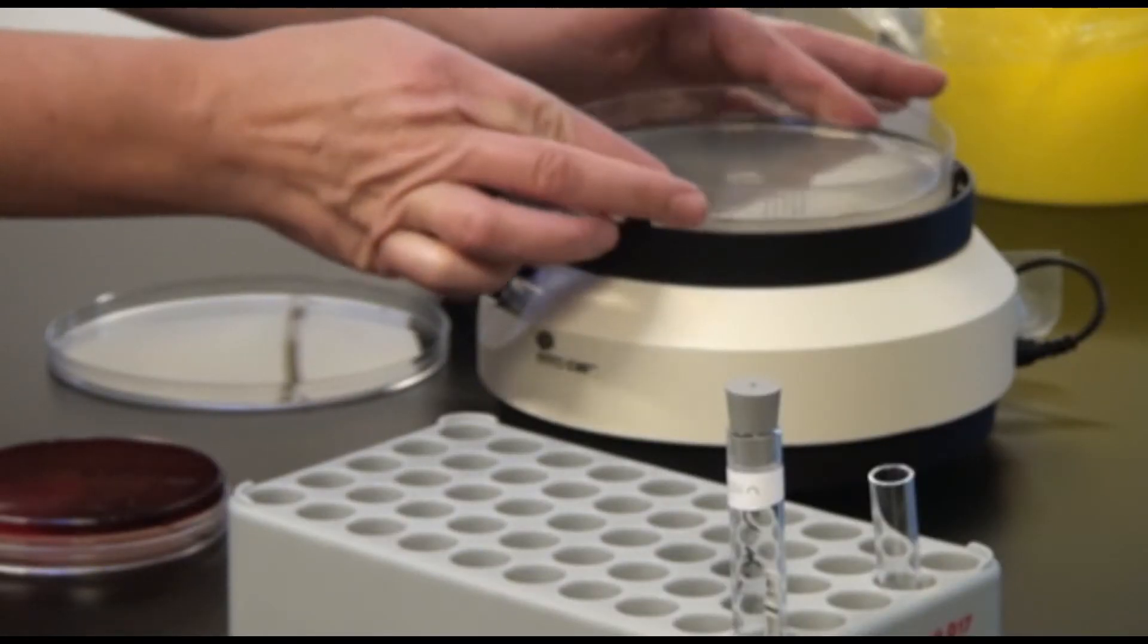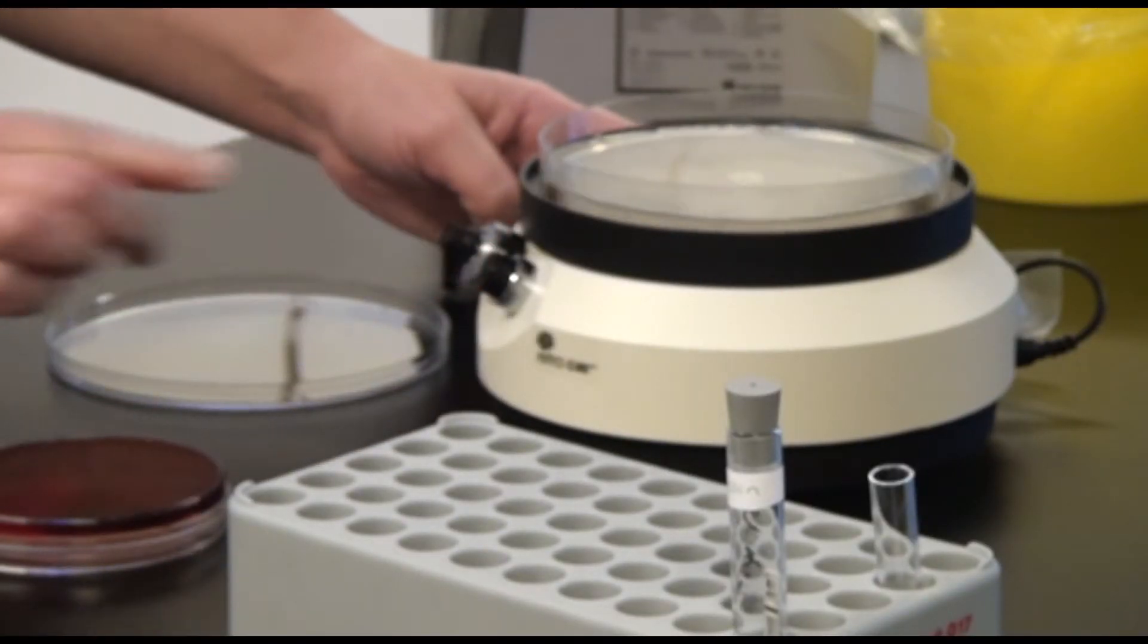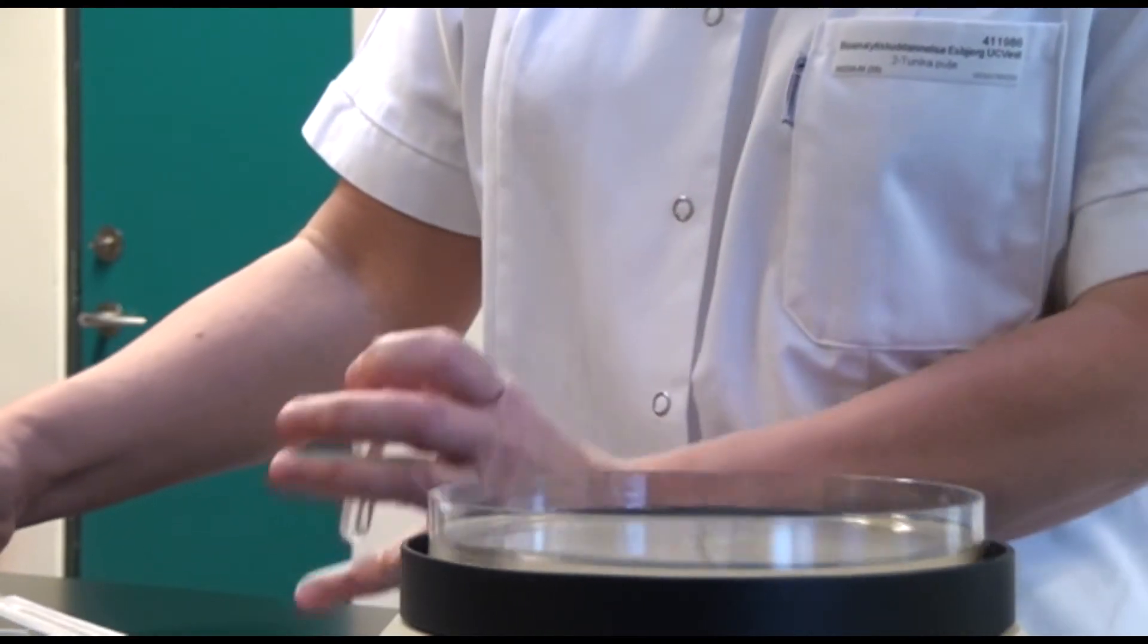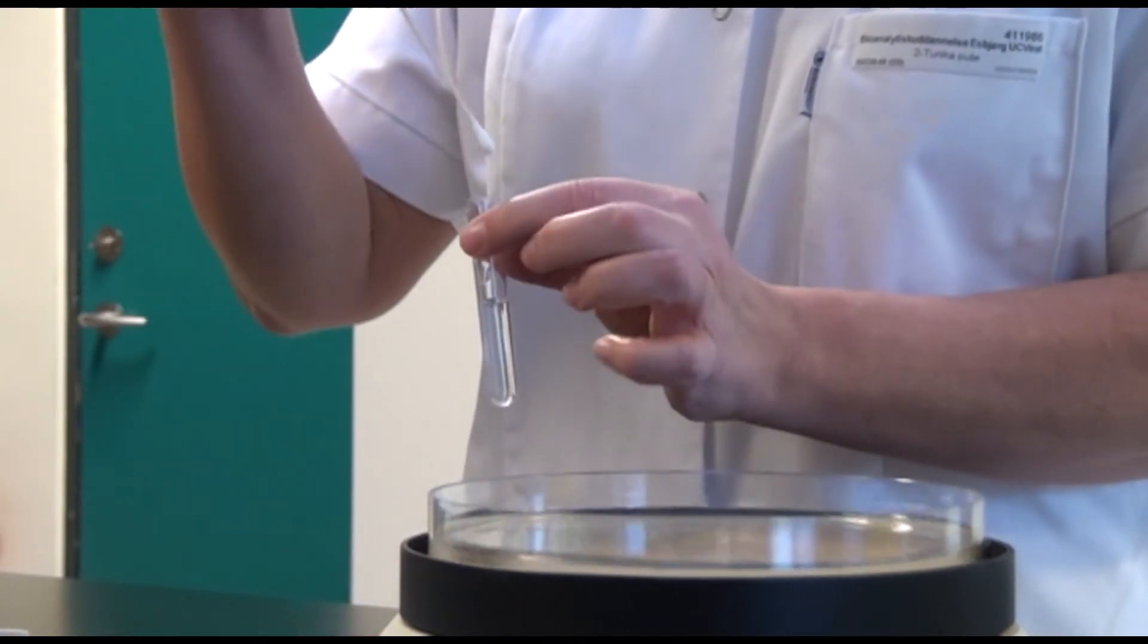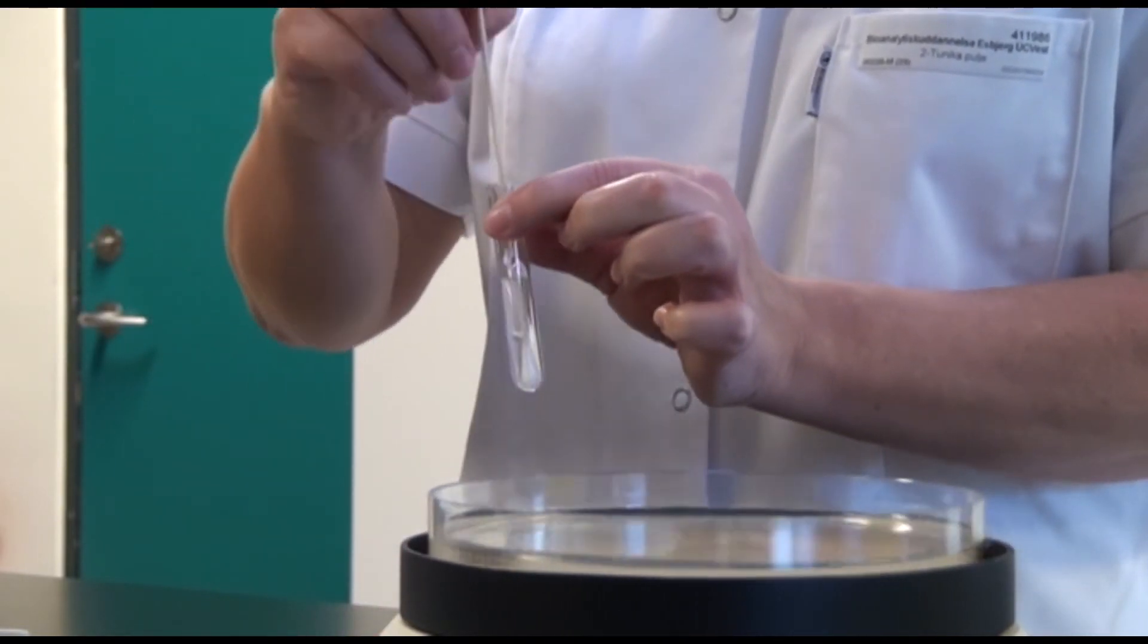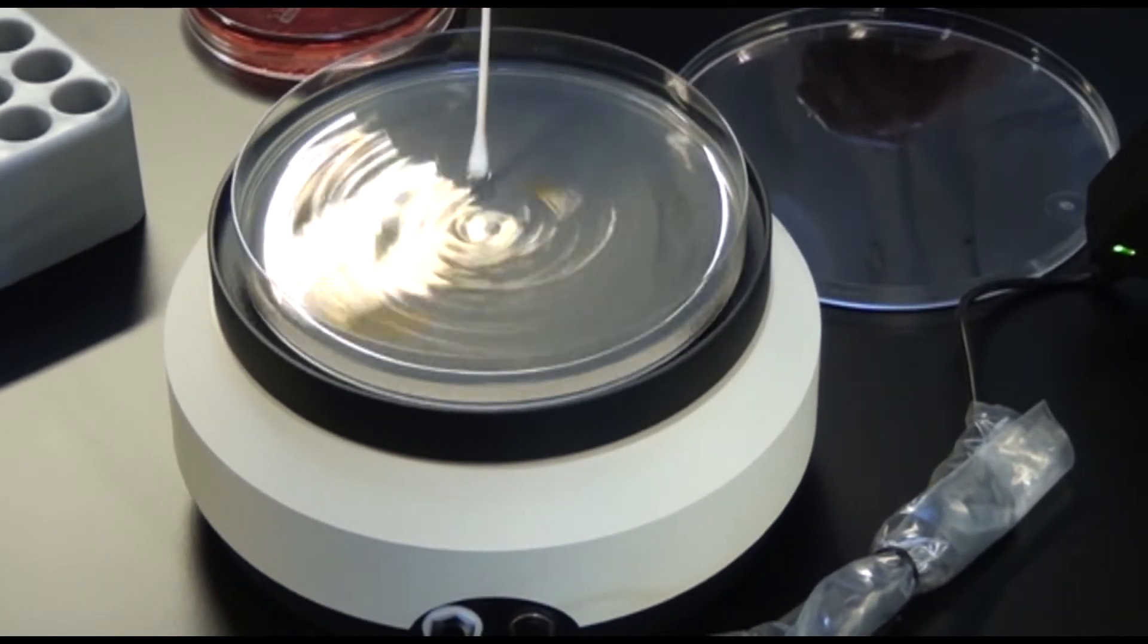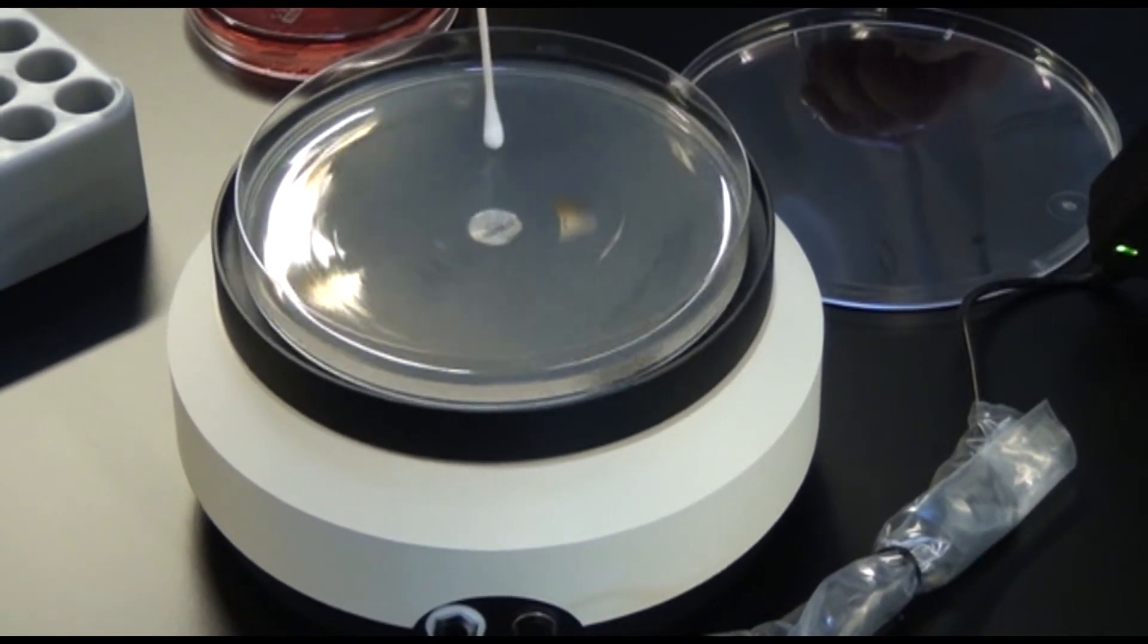Place the Møller Henson plate on the plate spreader and turn it on. A new sterile cotton swab is dipped in the suspension. Then the cotton swab is run across the plate at a steady pace with light pressure.